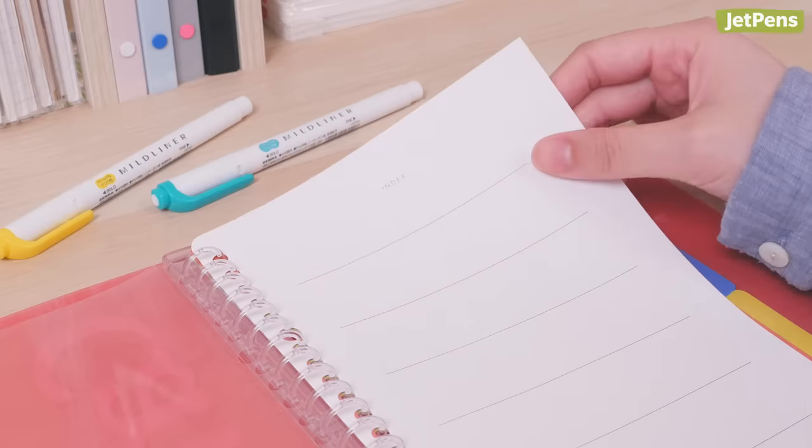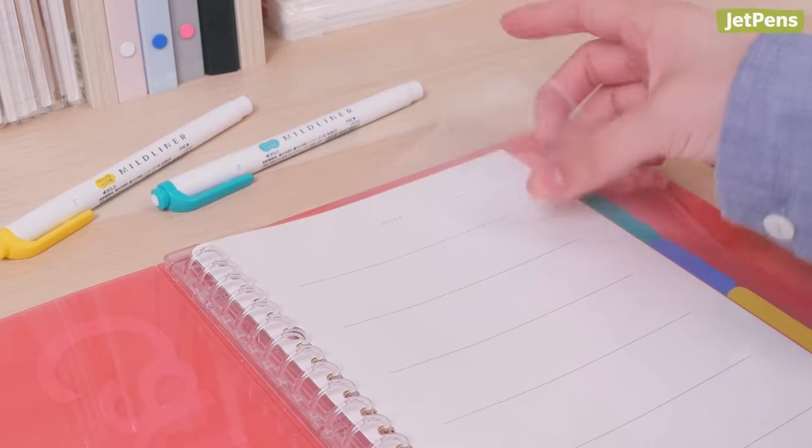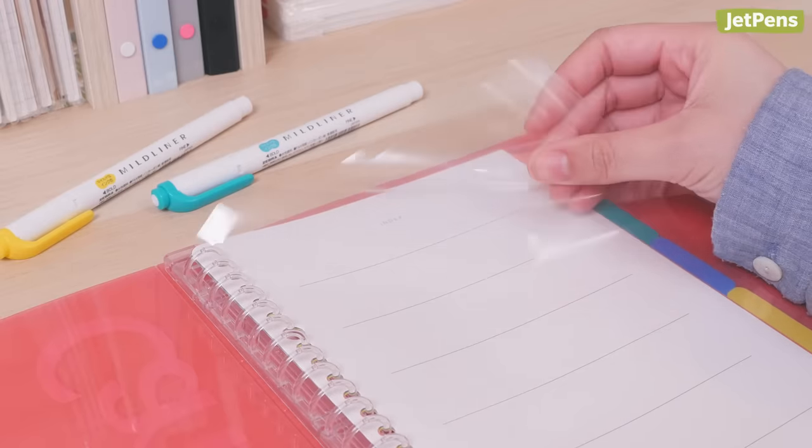All of the binders come pre-filled with an index page, dividers, and a clear pocket to get you started, and you can get more refills as you need them.